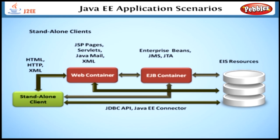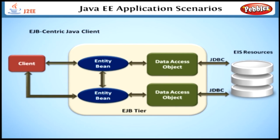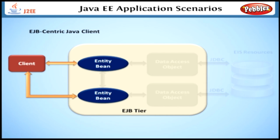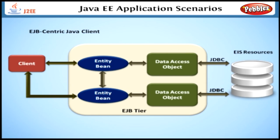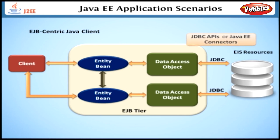Another type of standalone client is the EJB client, which interacts directly with enterprise beans in an EJB container within an EJB server. The client can directly access the enterprise beans, and the EJB server accesses EIS resources using the JDBC API and the Java EE connector architecture.